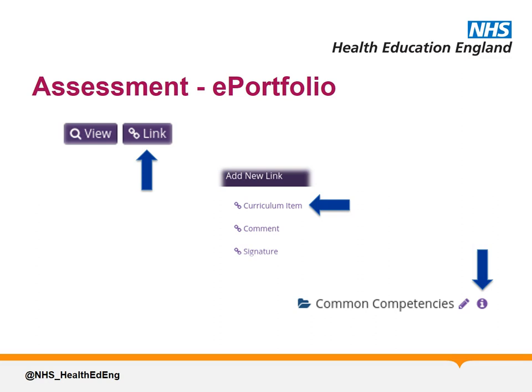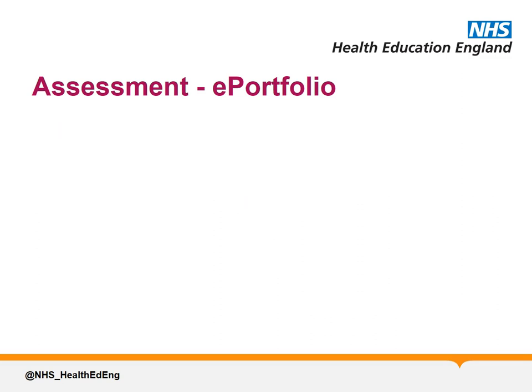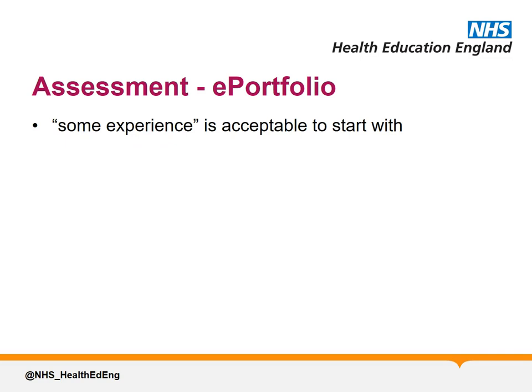Once you've completed your first few assessments, written a few reflections and attended some teaching sessions, you'll probably be in a position to start signing off curriculum items. Don't worry if you can't sign off anything as fully competent or achieved just yet. It's perfectly acceptable to start with having some experience and suggesting what you need to do to sign it off fully. Remember, this isn't a one-year programme, so not everything has to be perfect immediately, but adequate progression has to be shown each year as defined in the ARCP decision aid.